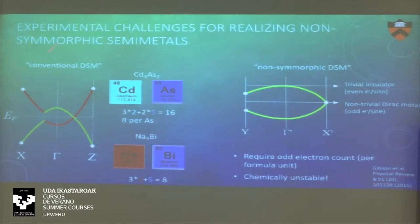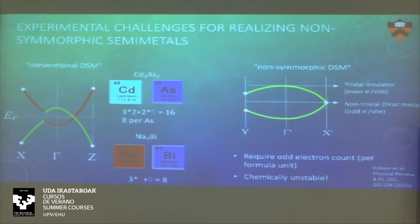In comparison to atomic direct semimetals where if the Fermi level is at the crossing point you have a charge-balanced system, here you really need something like an odd number of electrons per formula unit, which is hard to achieve — especially if you want it in a clean, isolated fashion. It is easier to stabilize if it overlaps with other bands.